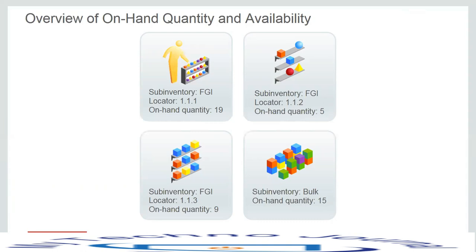A sub-inventory, as discussed in a previous session, is a physical or logical grouping of inventory such as raw material or finished goods. In the bulk sub-inventory, we have an on-hand quantity of 15.